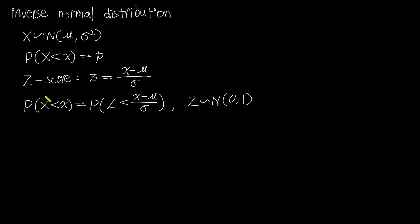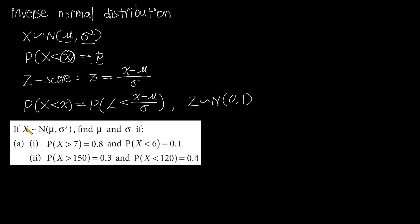We already know that when we know the mean, variance, and the value of small x, we can find the probability p with a calculator. The inverse normal distribution tells us: when the mean, variance, and probability are known, how to get the value of small x; or when the probability and the value of x are known, how to get the mean and the variance.